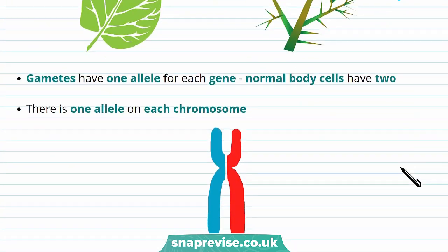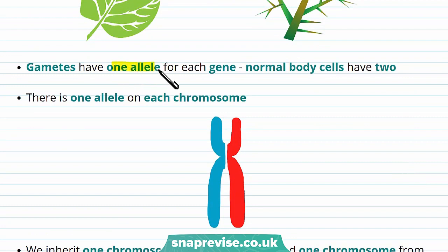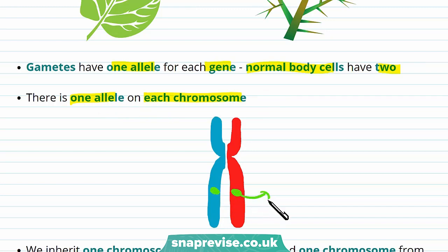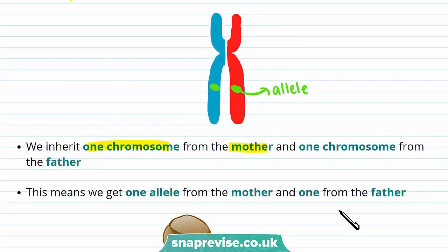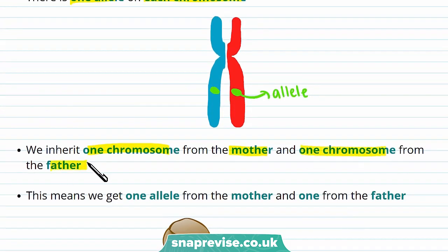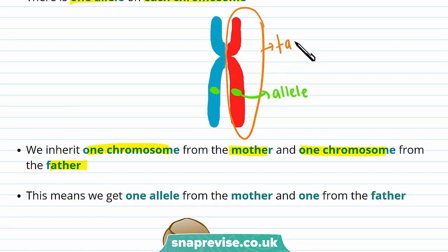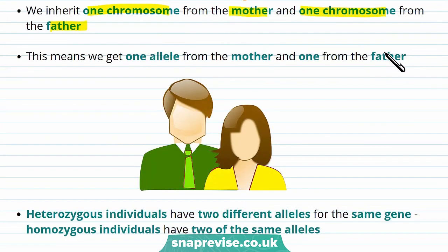So how do you inherit these alleles? Well, gametes have one allele for each gene, while normal body cells have two. In normal body cells, chromosomes are paired and there is one allele on each chromosome, and these alleles are in the same position on the chromosome. We have one allele from each parent as we inherit one chromosome from the mother and one chromosome from the father. For example, this chromosome and the allele it has might be inherited from the father, and this chromosome might be inherited from the mother. So this means we get one allele from the mother and one from the father.